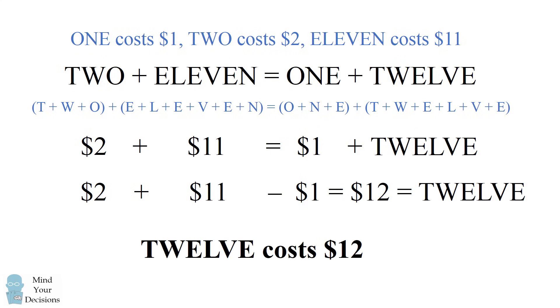So that's the answer. 12 costs $12, and it is the world's easiest problem because you might have been able to guess it without even going through all the algebra.